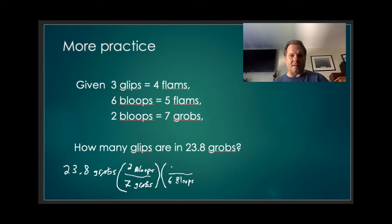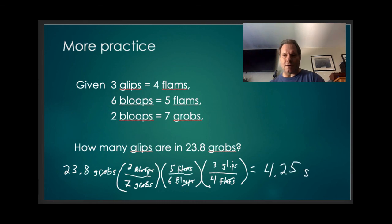So bloops is going to have to go in the denominator here. There's six bloops for every five flams. So the six bloops will go on the bottom to cancel my bloops. Put the five flams on top. And then I've got flams here. So flams will have to go on the denominator. Four flams to three glips. My flams cancel here. And now I've got the unit glips remaining. So 4.25 glips. Okay, so that pretty much wraps up this unit. We'll meet you back to talk more about these particular problems and have a little practice.